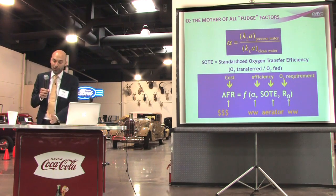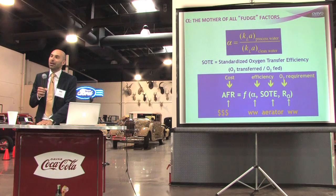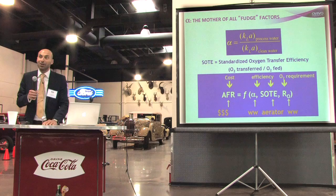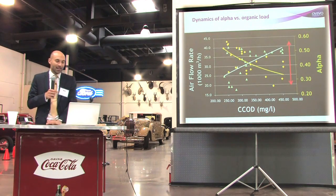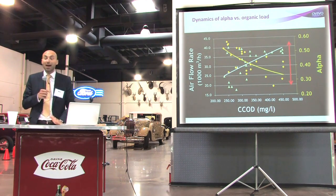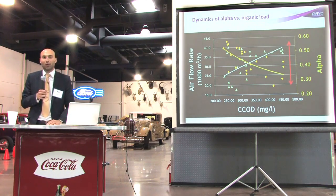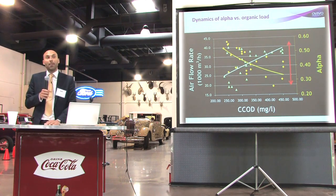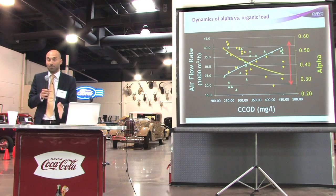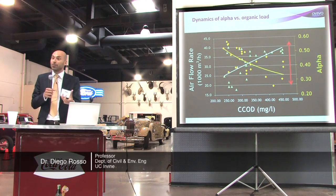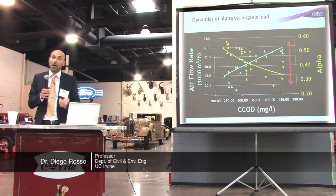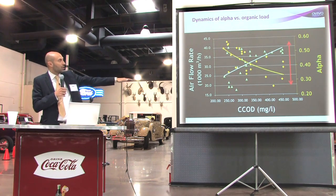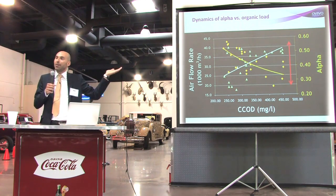In a study Mike and I worked on in Simi Valley, we conducted 24-hour tests measuring alpha·SOTE — we had SOTE values from the manufacturer and measured airflow multiple times per hour, plus grab samples with oxygen demand profiles. This let us create a graph of airflow rate versus COD showing that airflow rate increases when there's more oxygen demand because the controller detects depressed DO and calls for more air.